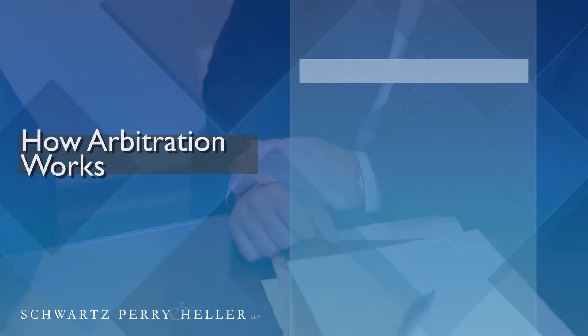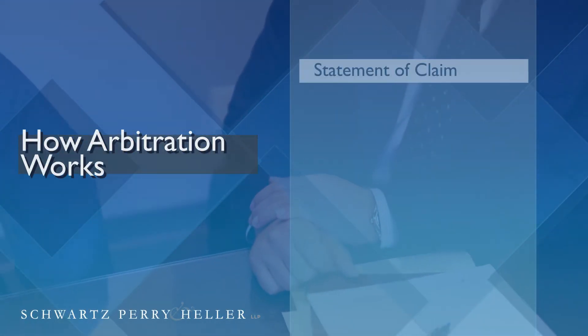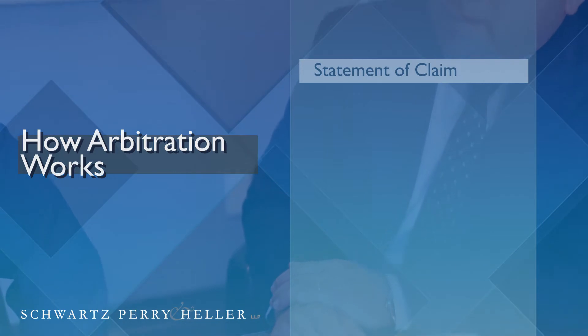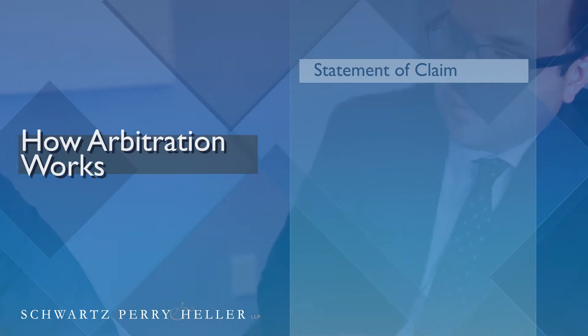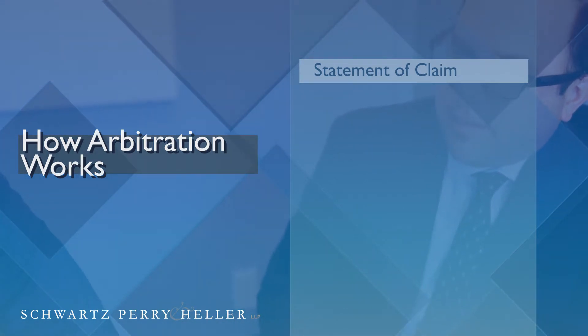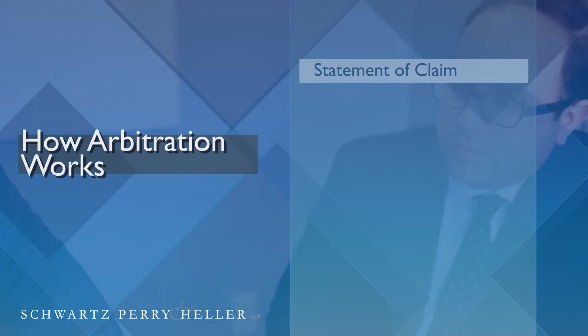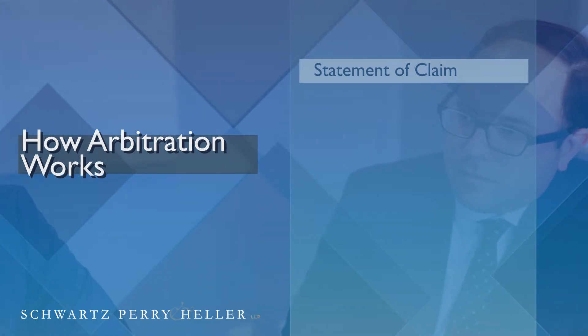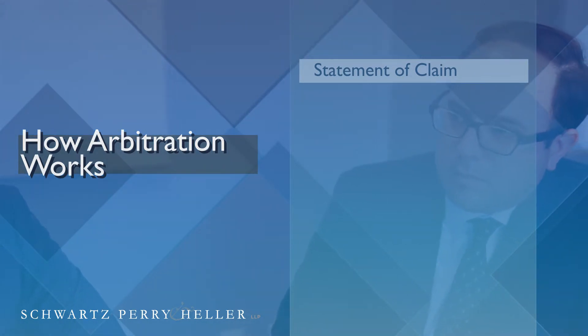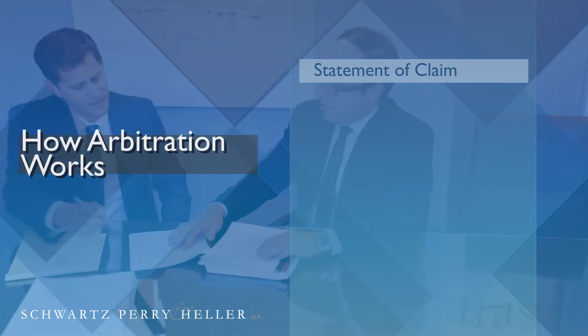The process of arbitration starts with what's called the statement of claim. In that particular document, an employee is going to describe what he, she, or they believe is unlawful. After a statement of claim is filed, the next major step in the process of arbitration is selecting an arbitrator.